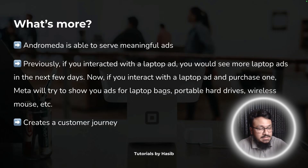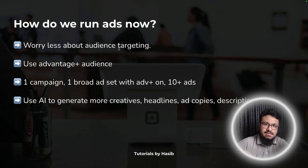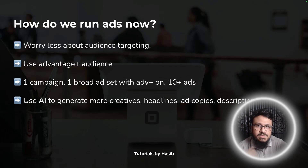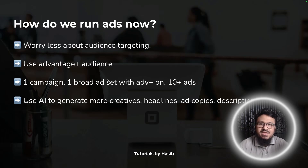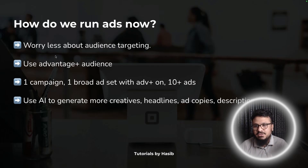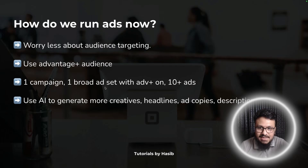Now, how do we run ads given these updates? We need to worry less about audience targeting. We can still get very good results with broad targeting. Using Advantage+ audience, we now have a high chance of getting great results with just broad targeting. Don't do interest-based targeting, lookalike audiences, or retargeting — just run one campaign with one broad ad set with Advantage+ turned on.